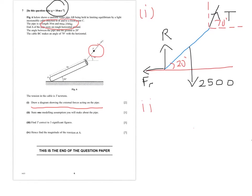Now part two is the modelling assumption. We have a pipe, and it tells us it's uniform — so we're not assuming the weight acts in the middle; we're told that. Since it's uniform, the weight acts in the middle. The only other assumption that is valid is the fact that we're representing our pipe as a line — turning it into a rod. The examiner will be looking for the idea that a uniform pipe is modelled as a uniform rod; we're not taking into consideration the shape.